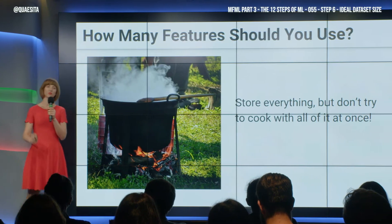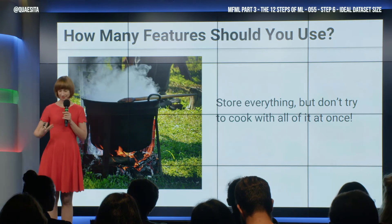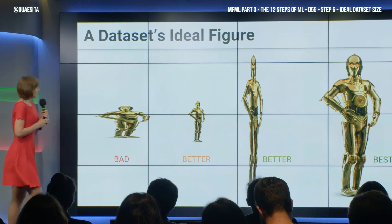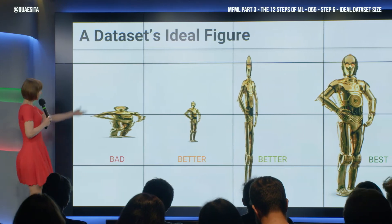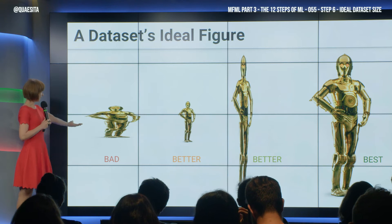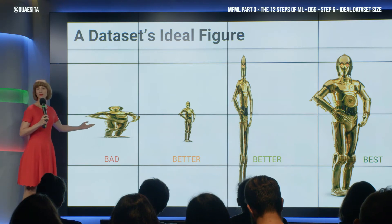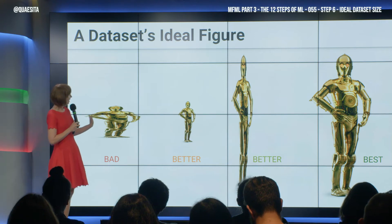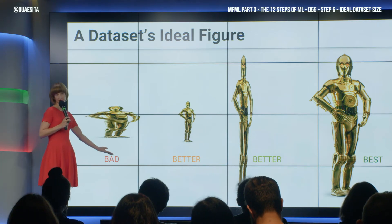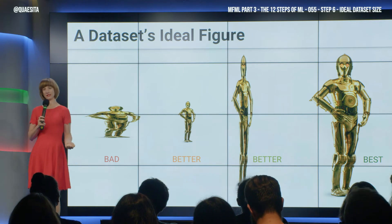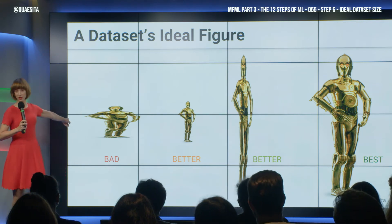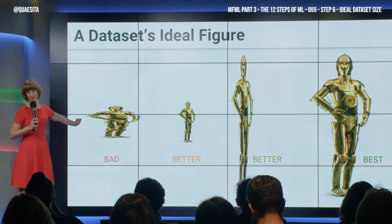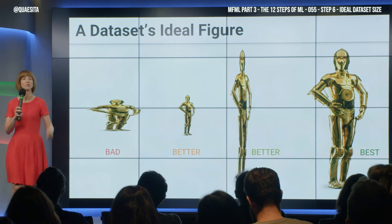Now we have to talk about body shape — a data set's ideal figure. Over here in the left-most position is the worst possible data set shape, which has as many as or more features than instances — a very chubby data set. When you have that situation, you are guaranteed overfitting, just from a matrix algebra perspective. And even when you don't have more features than instances, if you simply have a too-chubby data set, you are flirting with overfitting.